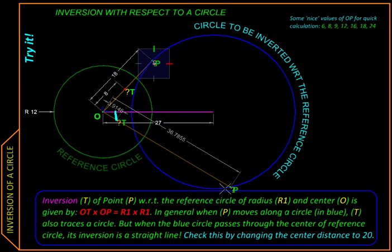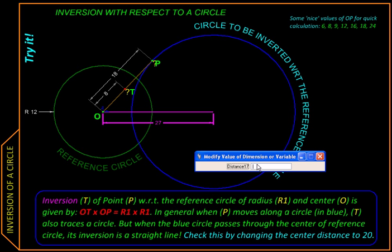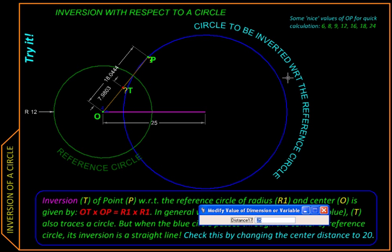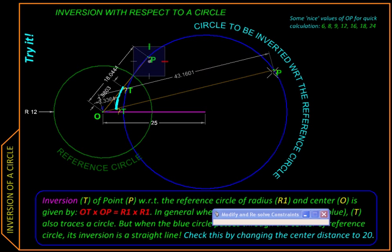Now let us see what is the effect of changing the distance between these two circles. So I am going to change their center distance to say 25, so they come a little closer, and now when we move point P, T also traces a circle but a little bigger one.